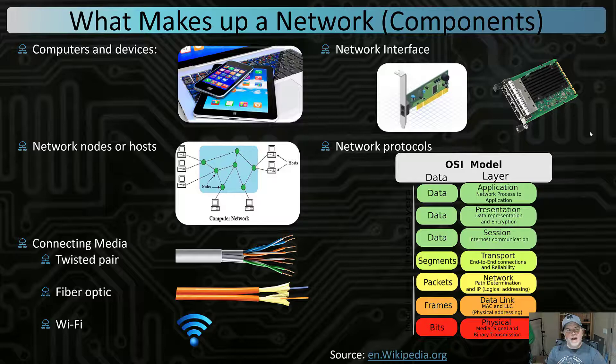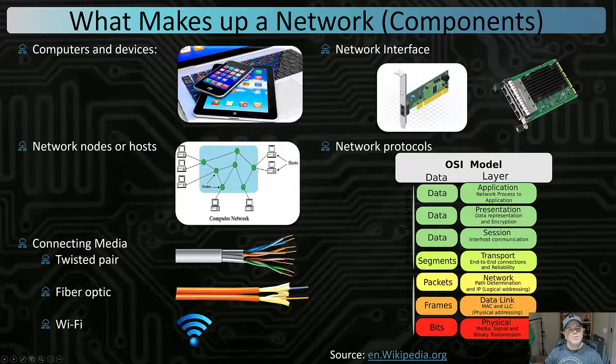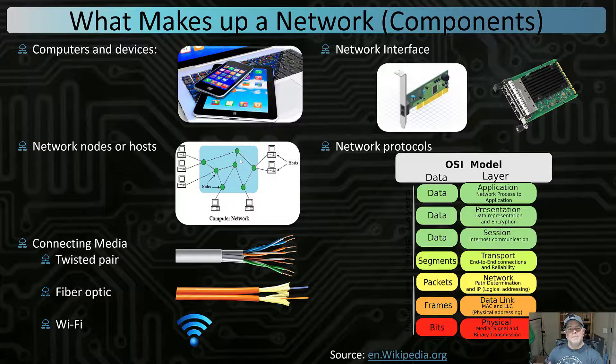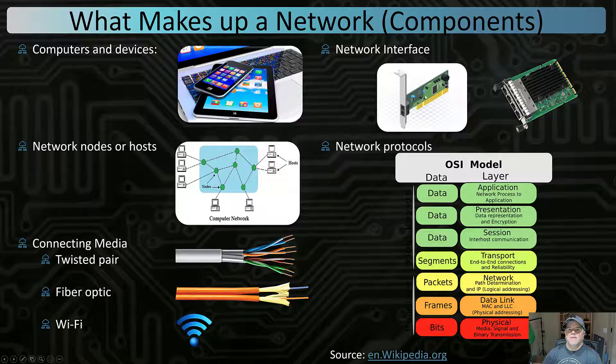What makes up a network are computers and devices — not just laptops, not just desktops, but our smartphones, our tablets, things like that that can connect. They have a network interface device that allows them to connect with a network. Network nodes and hosts: hosts are the devices or computers connected to the network, while nodes are the equipment that makes up the infrastructure — hubs, switches, routers, Wi-Fi access points, those kinds of things.